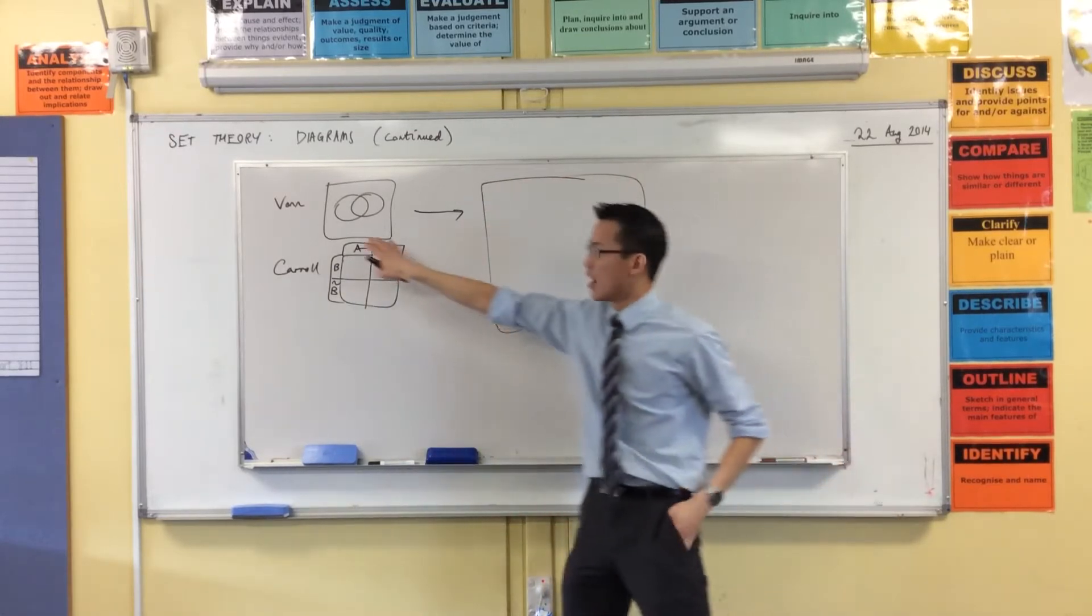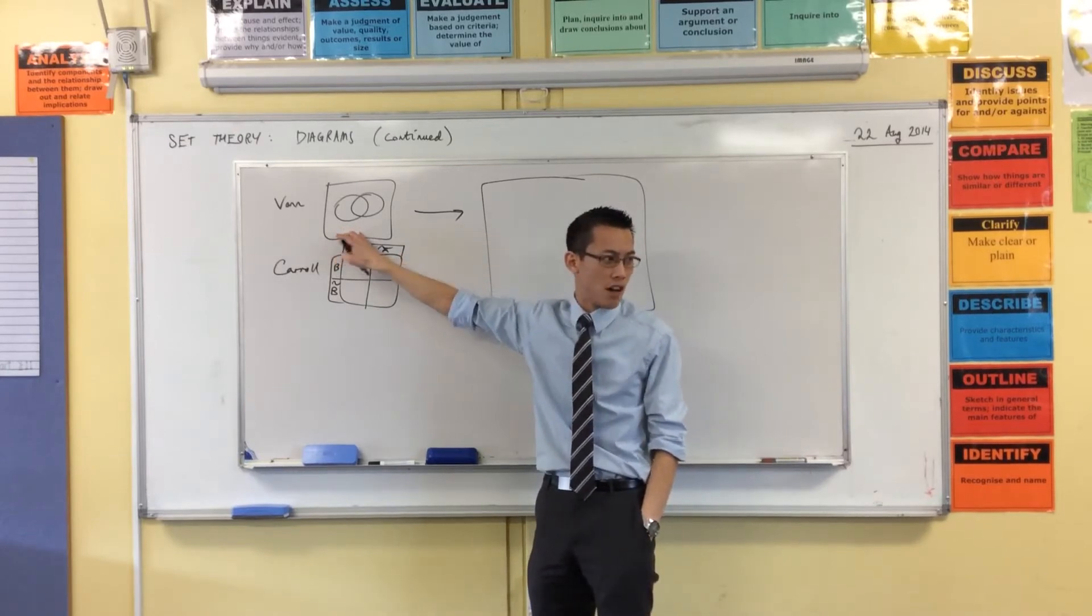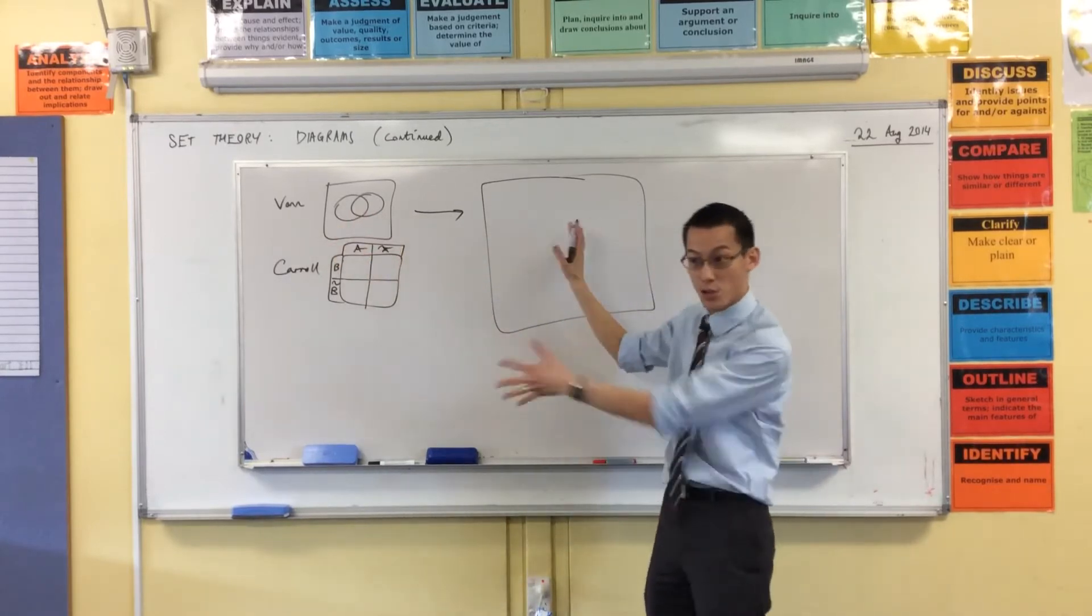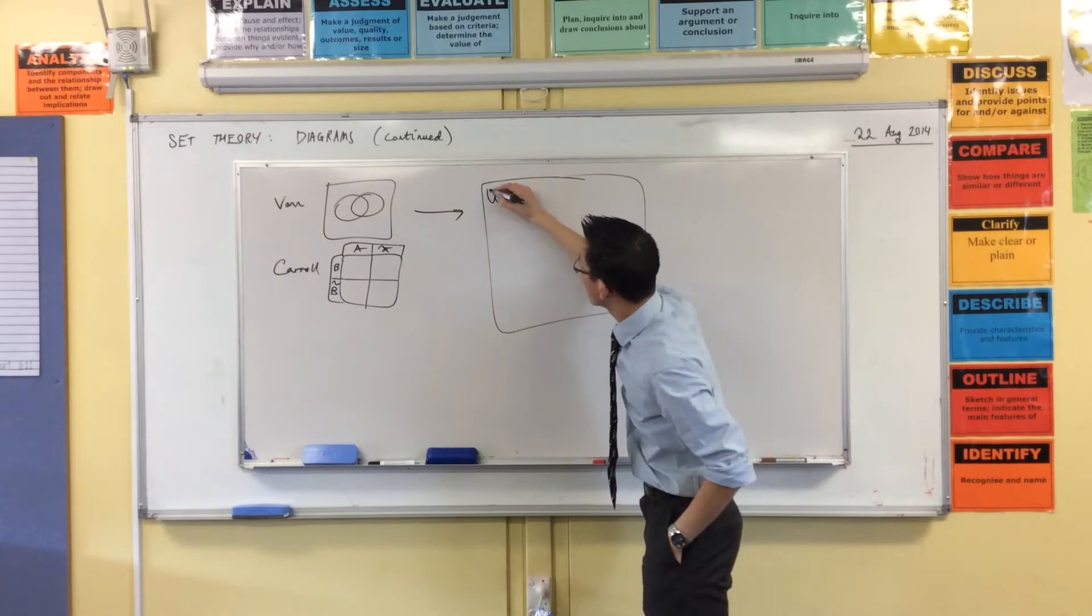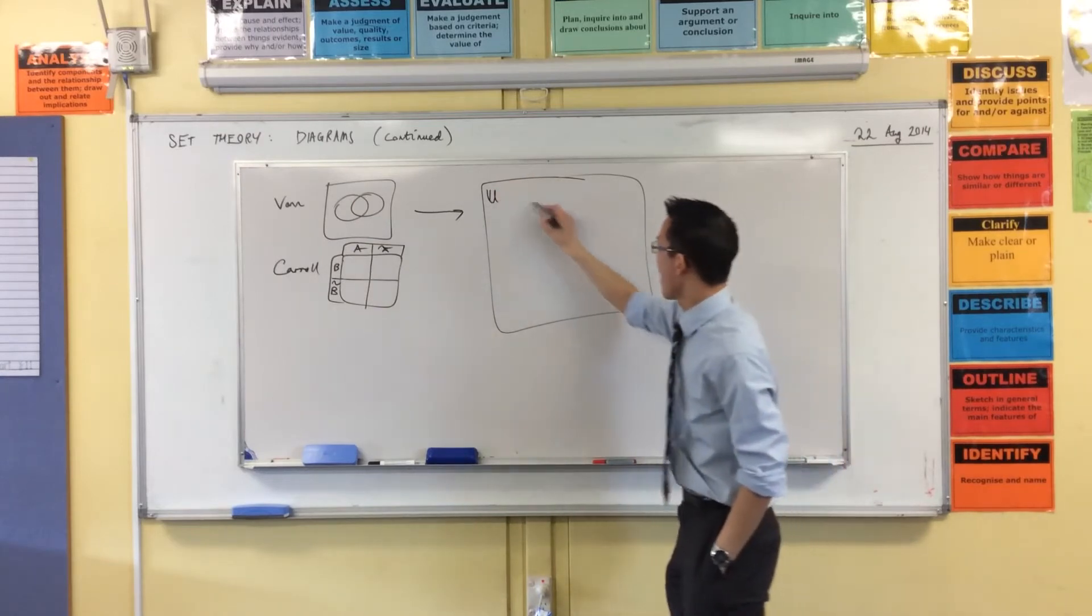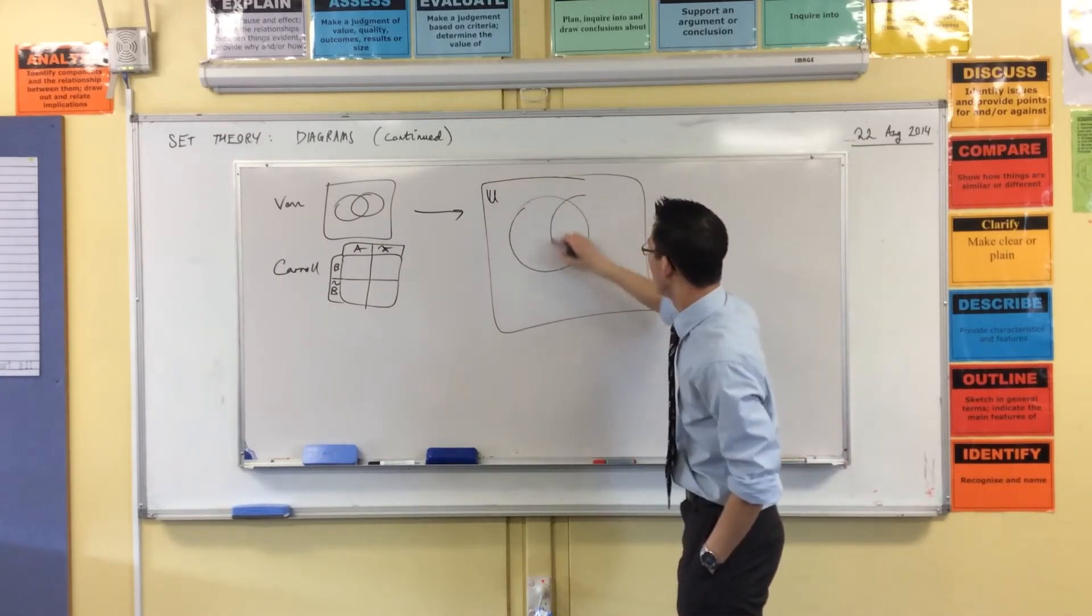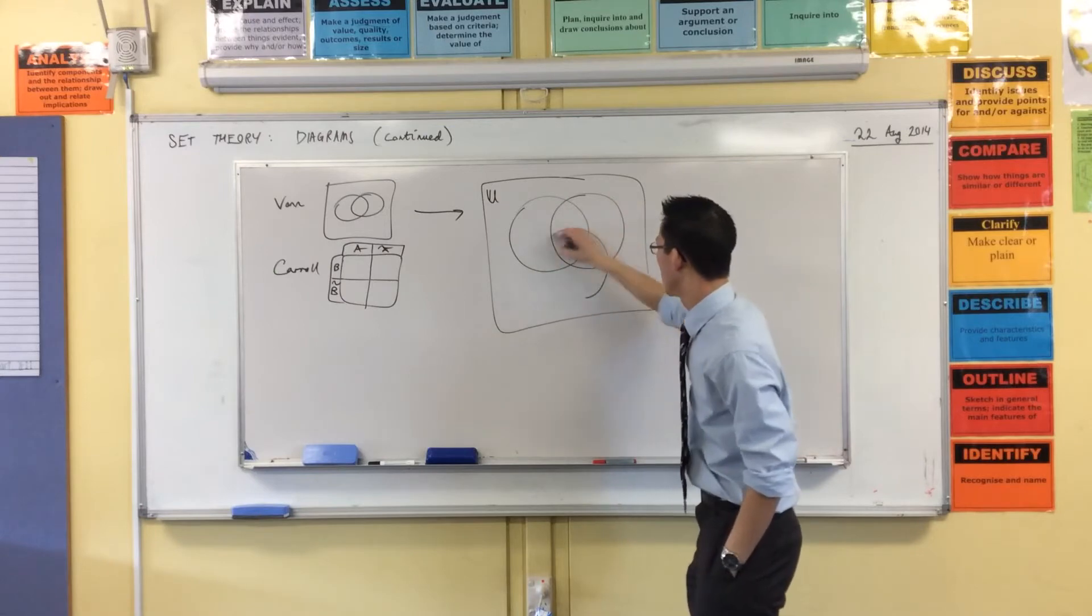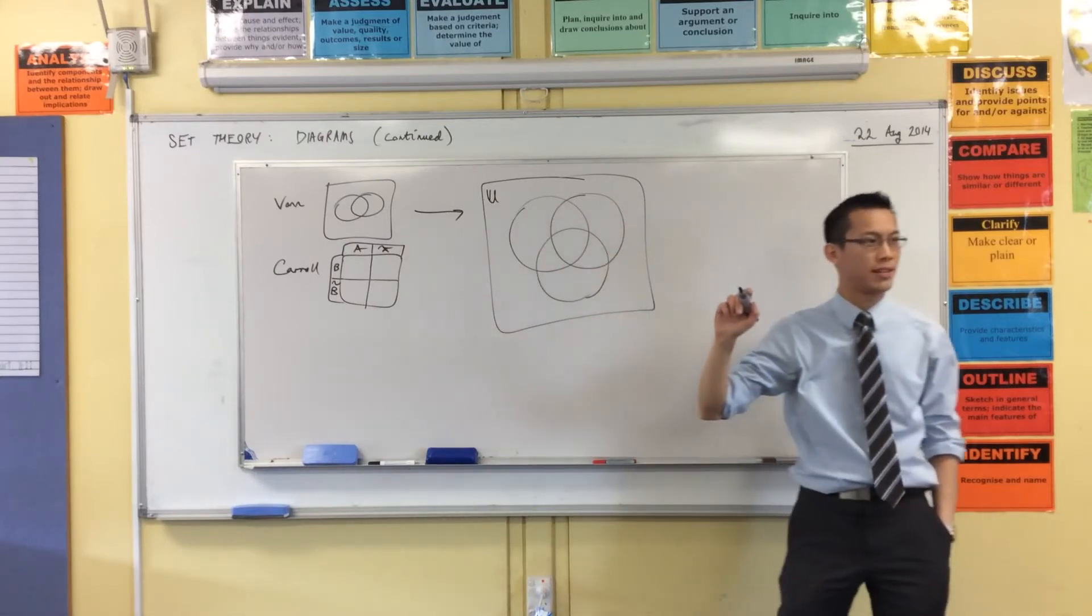If I wanted to take a Venn diagram and represent not just A and B, but A, B and C, what would it look like? Three circles. So we're going to do it a bit bigger. Now, it sort of makes sense. You're like, look, I have two circles here. I'll just do three circles. No problem. So let's draw this together. You've got your universal set out here, and you want to draw some nice, neat circles. Sweet. There you go.